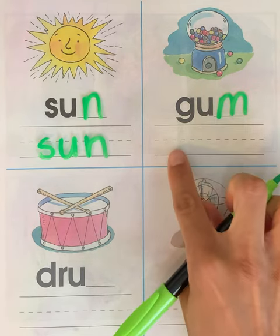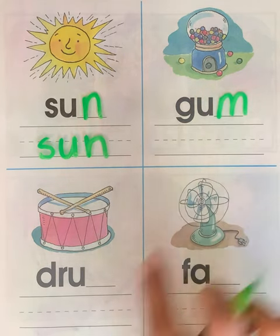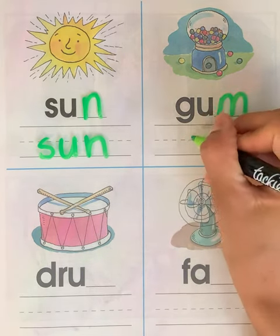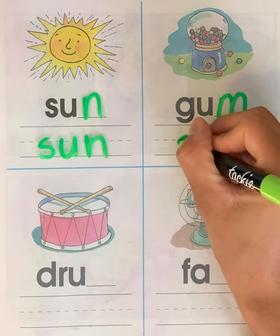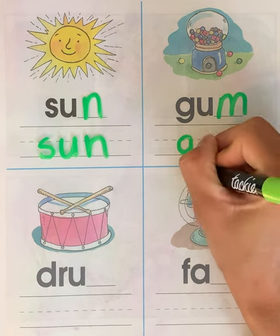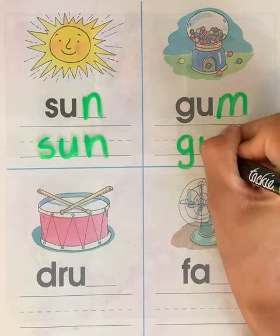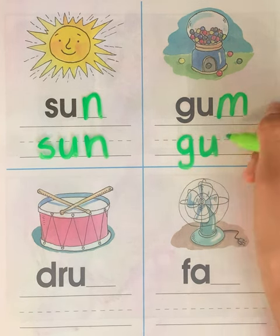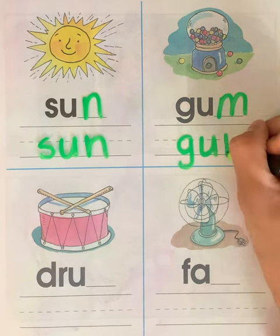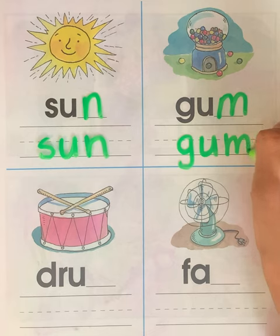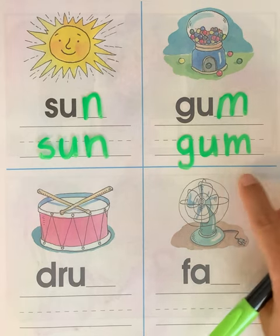Now we're going to write the word gum on the line. G. U. M. Gum.